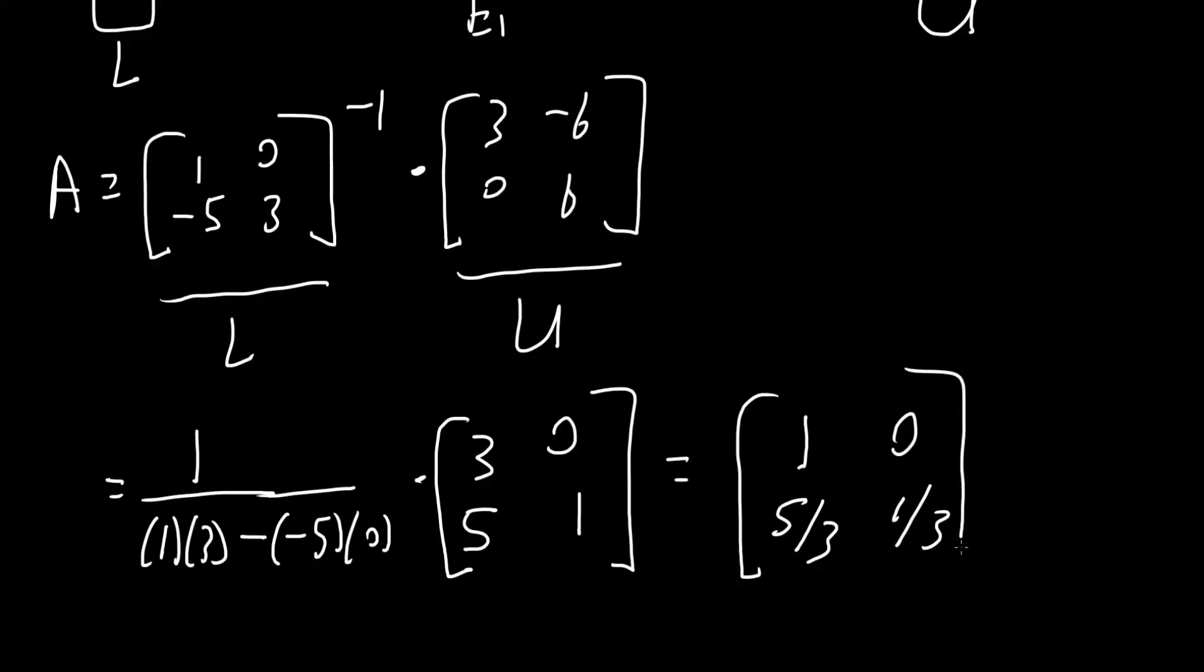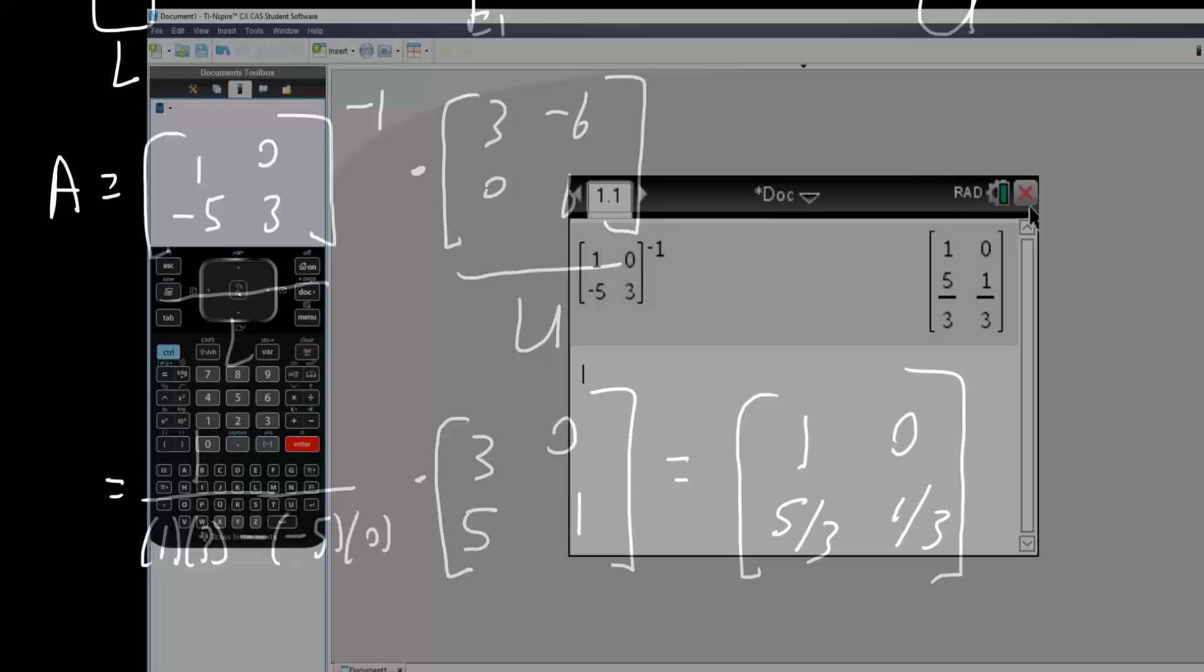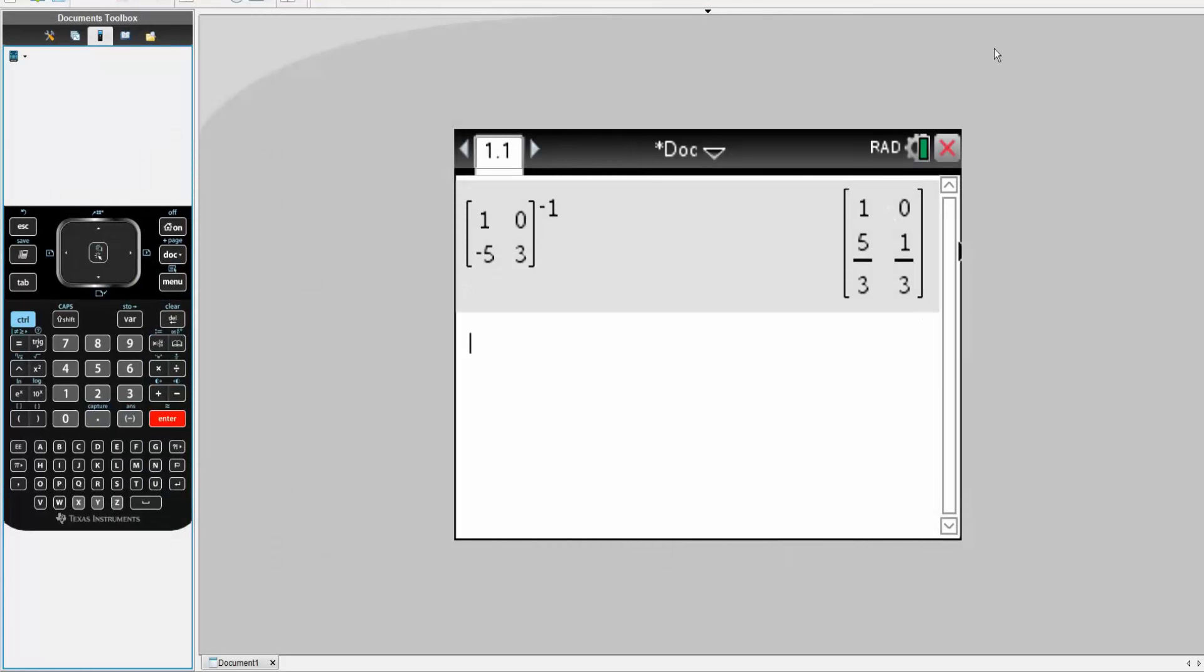And let's check if this compares to what we got on the calculator. So, 1, 0, 5/3, 1/3. And it's identical, so that's good.